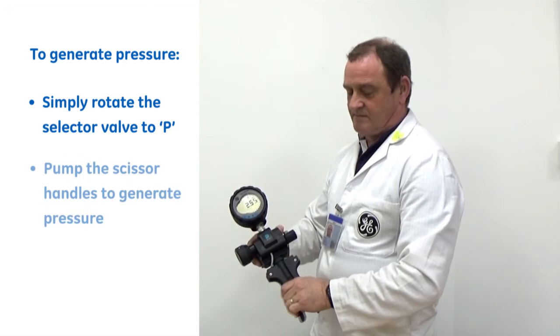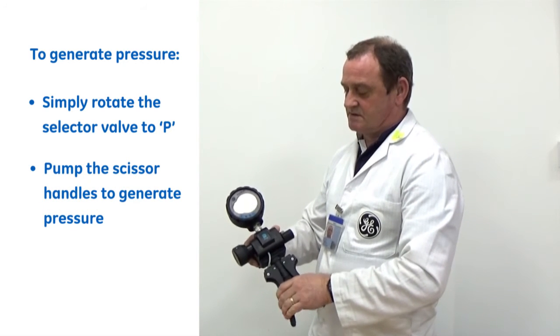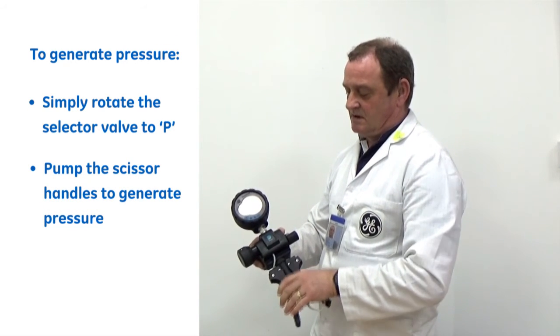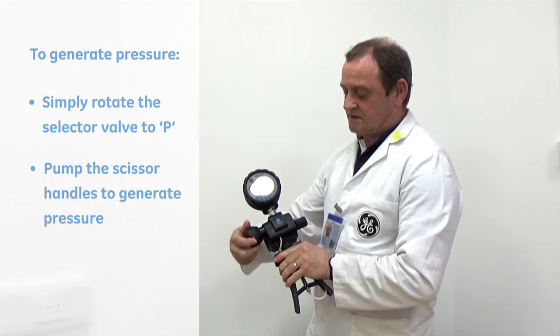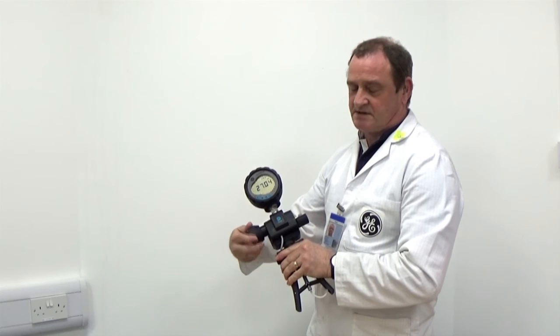And then again just squeeze the scissor handles together to generate a pressure. Pressure can again also be adjusted by the use of the volume adjuster to increase or to decrease the pressure.